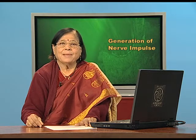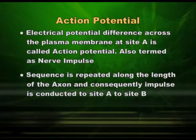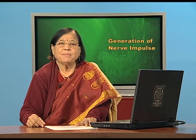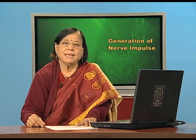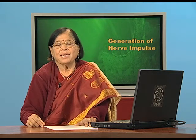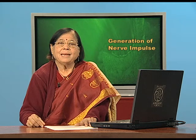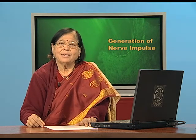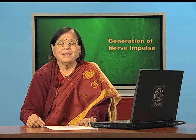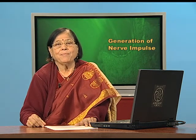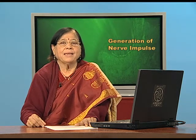Along with conduction, the fiber becomes once more responsive. Once the impulse moves from site A to B, site A becomes normal and site B is depolarized. When it moves from B to C, C is depolarized and B becomes normal, so A and B are both normal. When the stimulus moves from C to D, D is depolarized and A, B, and C become normal. By the time the impulse has passed through the nerve cell, the total nerve cell becomes normal and is therefore responsive again, ready to conduct more nerve impulses.